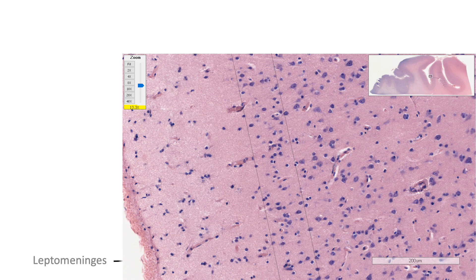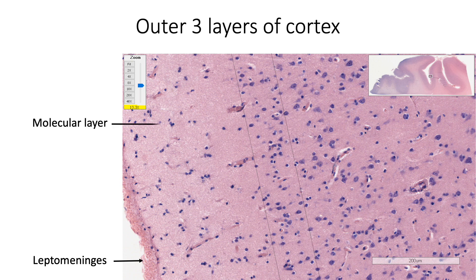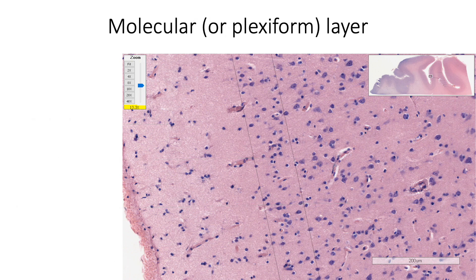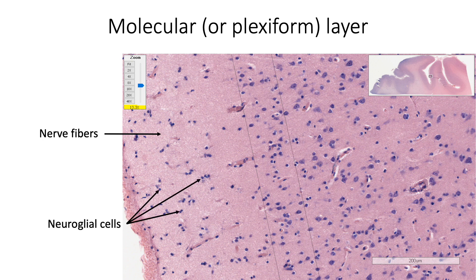Inside the covering of three layers of meninges, the outer three layers of the cortex include the molecular layer, the outer granular layer, and the outer pyramidal layer. The molecular or plexiform layer is the outermost pale area, just beneath the pia mater, and it is mainly made up of nerve fibers. Therefore it appears pale. The cells in this layer include neuroglial cells, which appear as naked nuclei, and a few horizontal cells of Cajal.